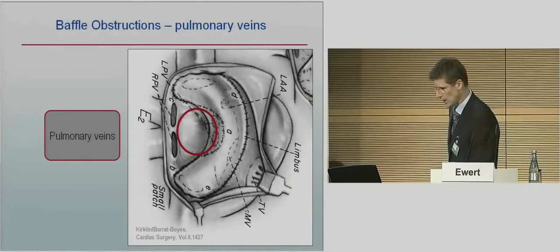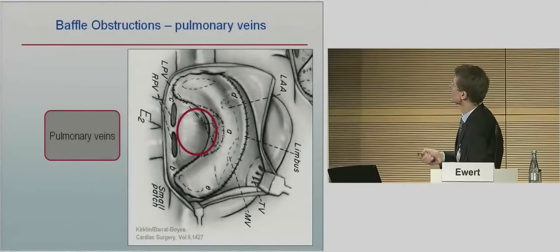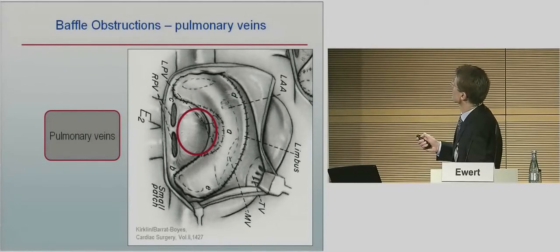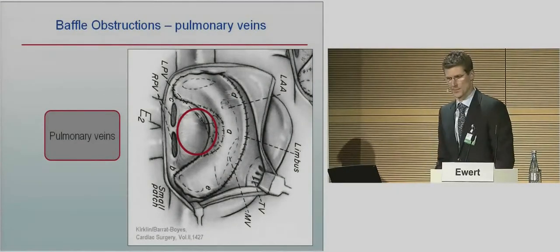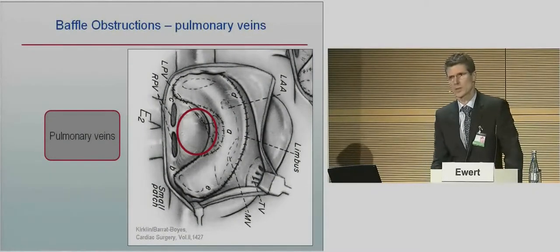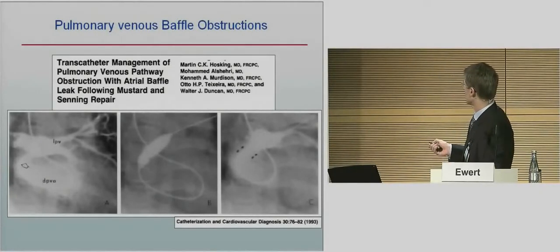Regarding baffle obstructions of the pulmonary veins: the pulmonary veins themselves are not tackled by the surgical technique - they are native. So stenosis at the orifice of the pulmonary veins is very improbable. The obstruction is at the separation of two compartments: one directly in front of the orifices, and another directly in front of the tricuspid valve - where sutures and the baffle itself can cause narrowing. We have limited experience with this; only one patient in our series had a serious pulmonary venous baffle obstruction. In the literature I found two very old examples from 1993 and 1994 from Martin Hosking in Ottawa.